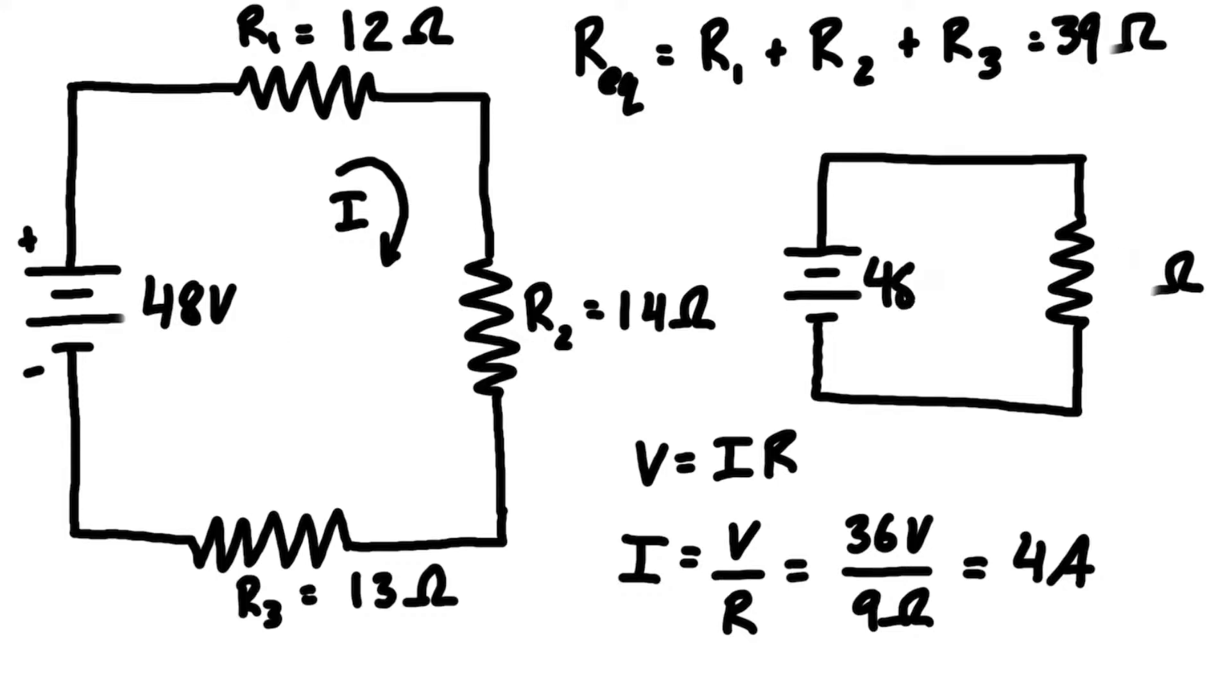We would have 48 volts and 39 ohms. For our expression down here, we have 48 volts divided by 39 ohms, and that gives us a value of about 1.23 amps.